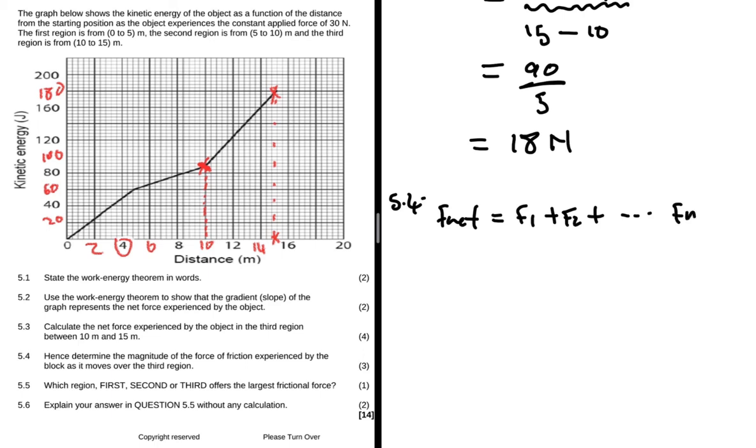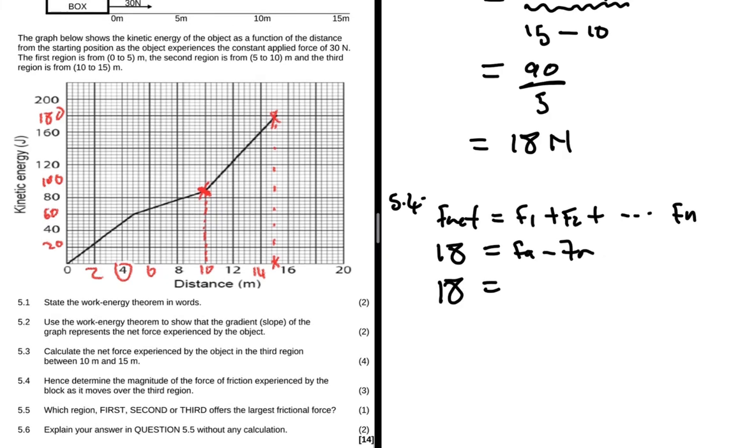So force of friction. We know that F net equals F1 plus F2 to some Fn depending on the number of forces you have. On that region 10 to 15, we know that the F net is 18 newtons. So we have F applied minus friction. We say minus friction because it opposes the motion. So we're going to have 18 equals to, what's F applied? We are told that F applied is 30 newtons.